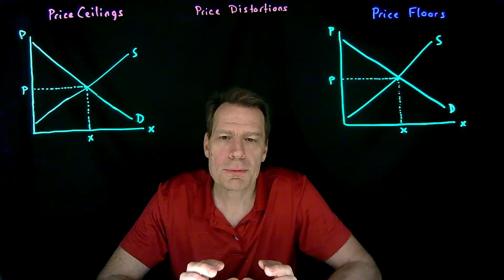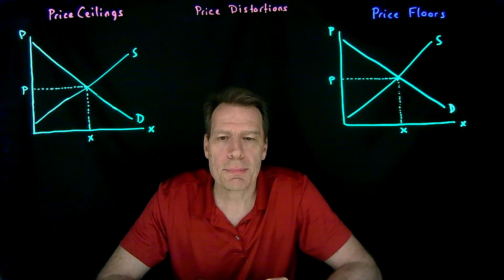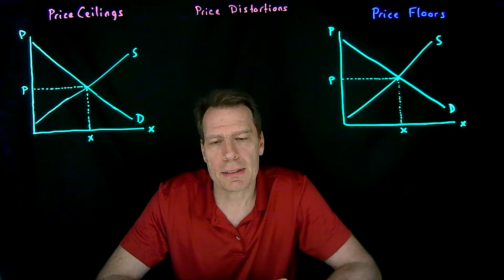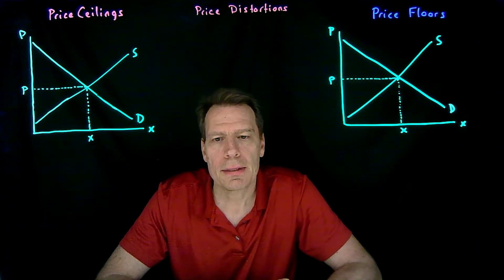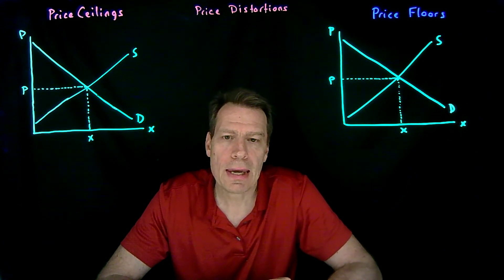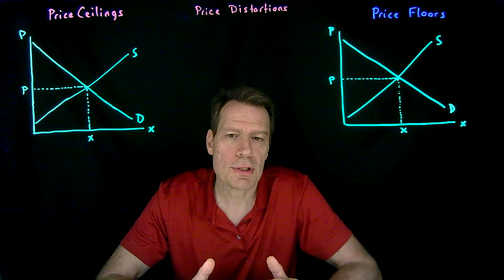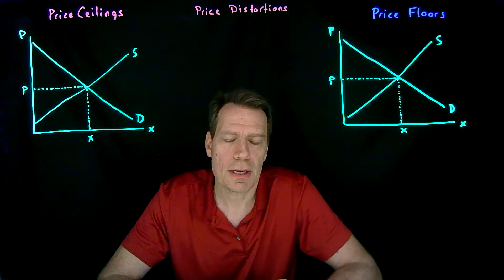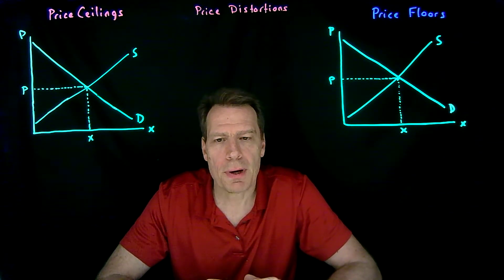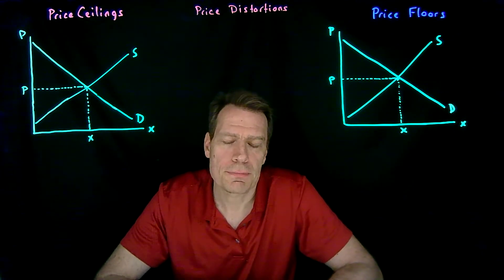The most explicit way in which we could disturb prices is by having governments distort those prices. They could distort those prices by saying you can't charge more than a certain price, or you can't charge less than a certain price. Those kinds of policies are called price ceilings and price floors.